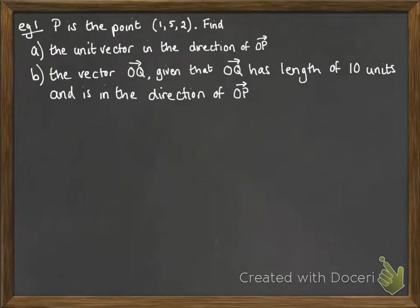Here's our example question. P is the point (1,5,2). We need to find the unit vector in the direction of OP. Remember OP is the position vector of the point P. Then we will find the vector OQ given that OQ has the length of 10 units and is in the direction of OP.